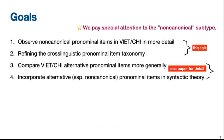Specifically, we have four main goals in our study. First, we will observe non-canonical pronominal items in Vietnamese and Chinese in more detail. Second, we will refine the cross-linguistic pronominal item taxonomy. Third, we will compare Vietnamese and Chinese alternative pronominal items more generally. And fourth, we will incorporate alternative pronominal items, especially non-canonical ones, in a unified syntactic theory. In this presentation, we focus on the first two goals due to time limits, and the third and fourth goals will be dealt with in our paper.